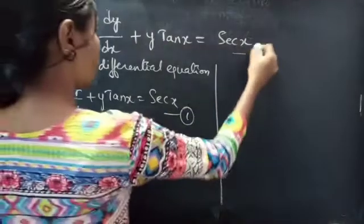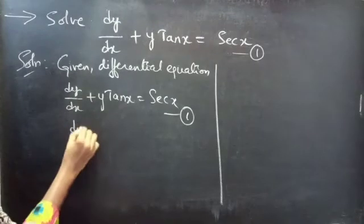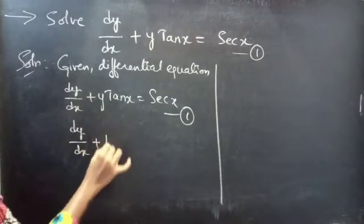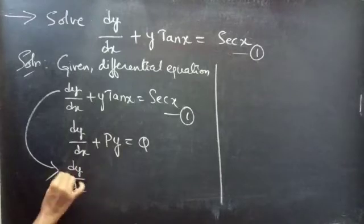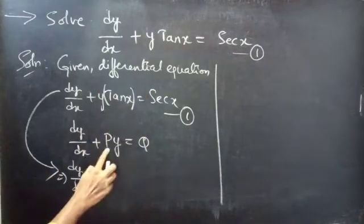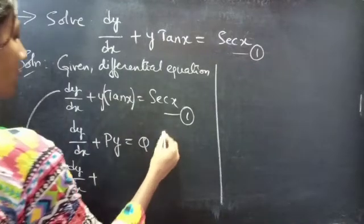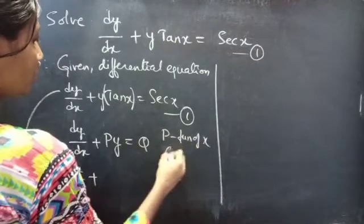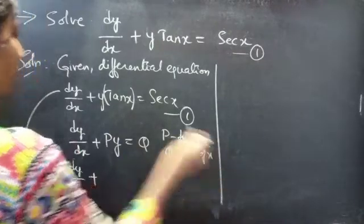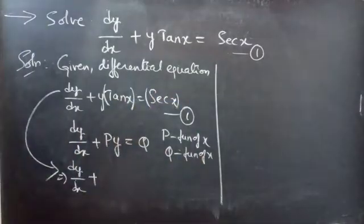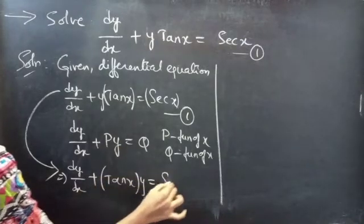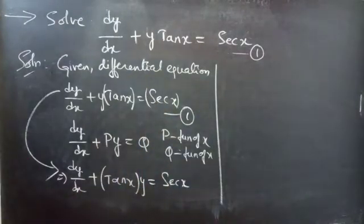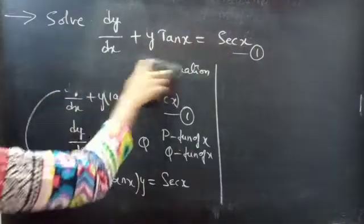Consider the given equation as equation 1. Now, compare this with the standard form of a linear differential equation, that is dy/dx + P·y = Q, where P and Q are functions of x. Here we have tan(x) and sec(x), which are functions of x. By comparing, we get P = tan(x) and Q = sec(x).